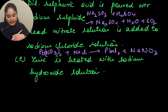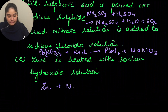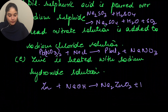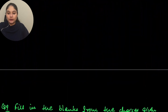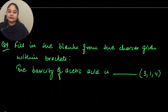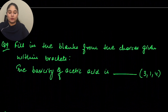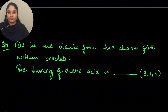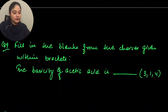Fill in the blanks from the choices given within the brackets. The basicity of acetic acid: when we talk about basicity, we are talking about replaceable hydrogen atoms. The formula for acetic acid is CH₃COOH.